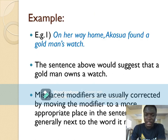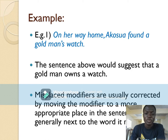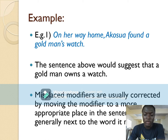An example of a misplaced modifier: 'On her way home, she found a gold man's watch.' This sounds awkward because the sentence suggests a man made of gold owns a watch, which is not the intended meaning. The modifier 'gold' has been inappropriately misplaced. Misplaced modifiers are corrected by moving the modifier to a more appropriate place in the sentence — generally next to the word it modifies.